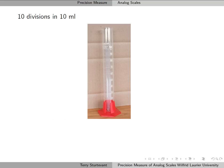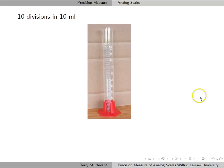Here we have a graduated cylinder. In this case, we have a difference of 10 milliliters, and in those 10 milliliters we have 10 divisions. So we have 1 milliliter per division, which makes the precision measure half of that, or 0.5 milliliters.